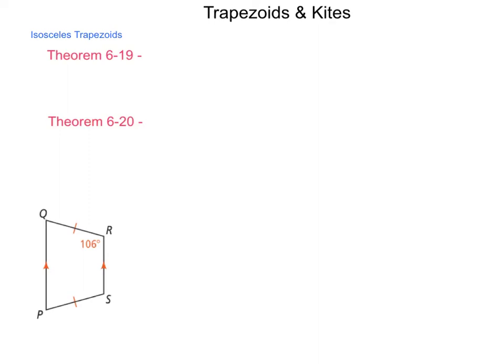Continuing our discussion in quadrilaterals, moving beyond parallelograms, we're going to do a brief lesson here on trapezoids and kites. We're getting a couple of new theorems talking about the relations that exist within these shapes. So let's begin with isosceles trapezoids.